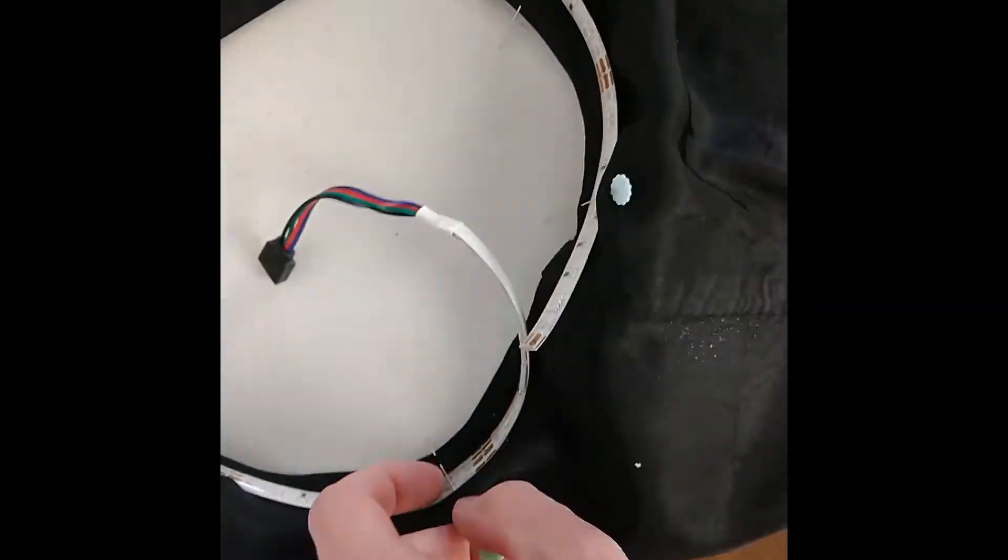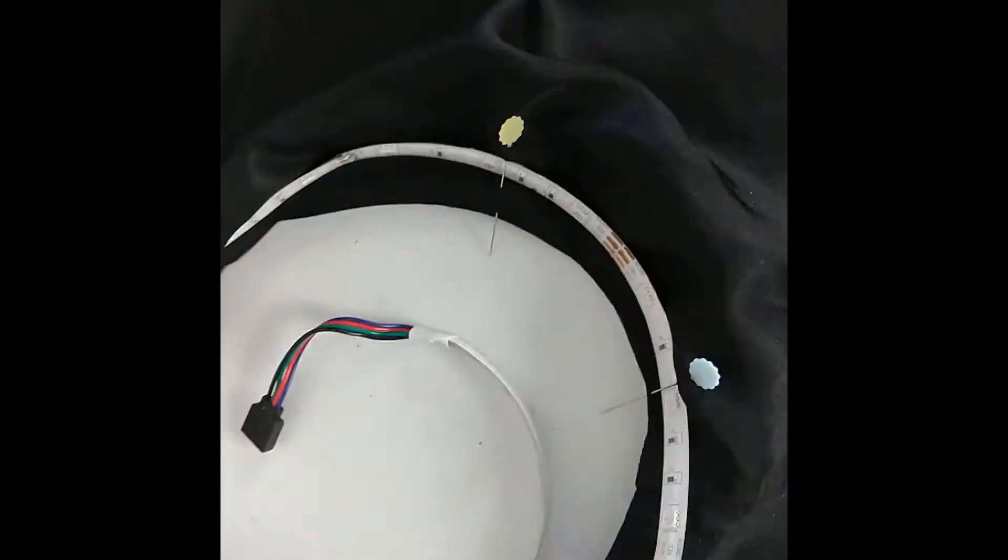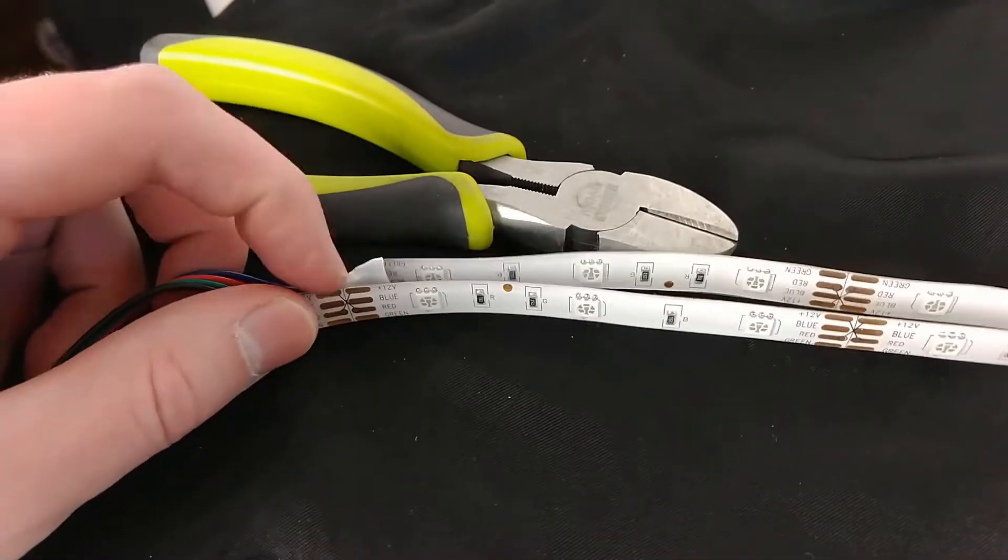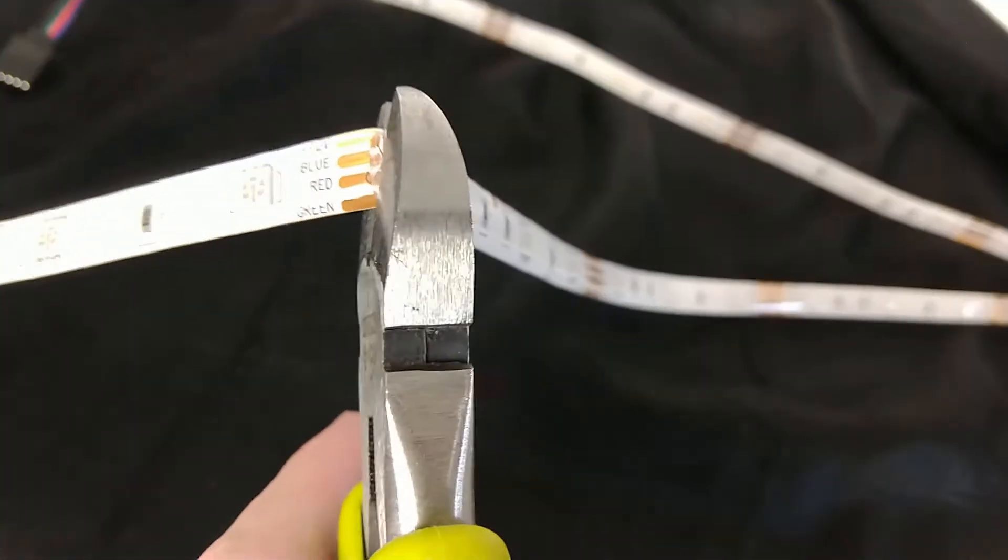Next, I removed the pins and lined up the cut strip with the end of the remaining roll. Now I have two equal length strips for both of my arms.